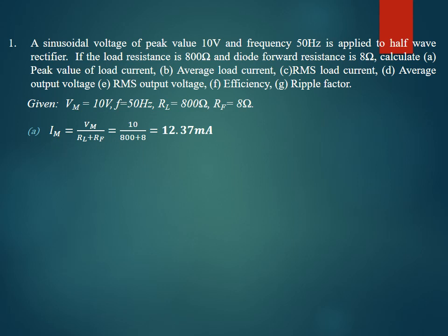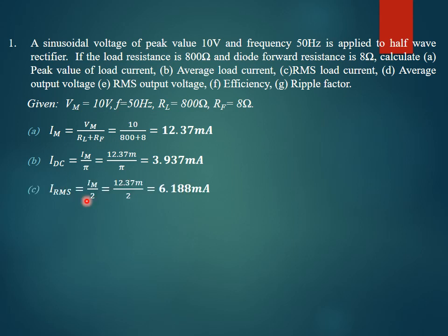Having found the peak value of load current, the DC load current is given by IDC = Im / π, which gives us 3.937 mA. The RMS load current is Im / 2, which comes out to be 6.188 mA.